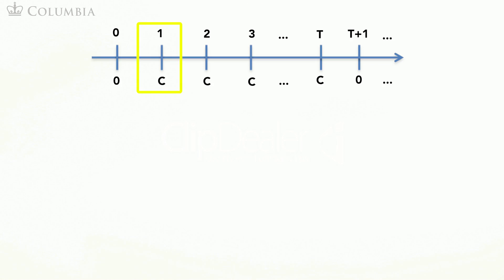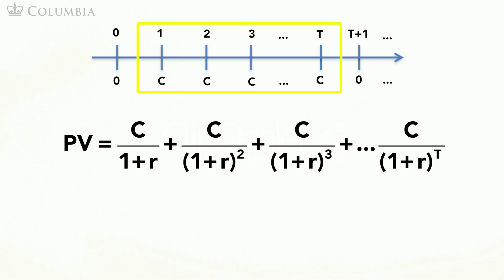For example, you might receive an amount C starting in year 1 and lasting for T periods only. Again, you can compute the present value using the general formula and discount each of these cash flows separately and add them up.